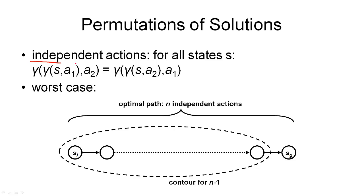Often, permutations are allowed if we have independent actions in our domain. If for all states s, if we first apply one action and then another, we get one state, and that is the same state as applying the actions in the reverse order, then we say these two actions are independent.